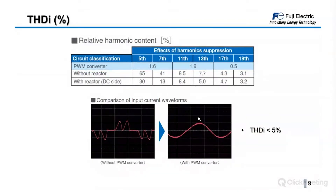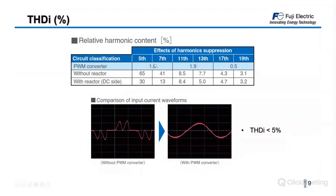Regarding THDi: when using a PWM converter ERHe, total harmonic distortion goes below 5%. By controlling the IGBTs on the ERHe, we generate an almost perfect sinusoidal wave, as shown in the image. On the left is the current waveform with a standard inverter without a reactor, and the graphic shows the harmonic level percentage for each harmonic — comparing the standard inverter case with and without reactors versus the ERHe solution.